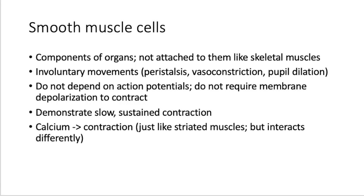Just a few more details on smooth muscle. They're components of organs — not attached to them like skeletal muscles are attached to bone. They're basically a part of the organ. Involuntary movements — peristalsis, vasoconstriction, pupil dilation are some examples. Smooth muscle cells don't actually depend on action potentials and don't require membrane depolarization to contract. They also have some types of pacemaker activity, which we'll get into later. They demonstrate slow, sustained contractions, and calcium is the trigger of a smooth muscle contraction, as well as a skeletal muscle contraction.